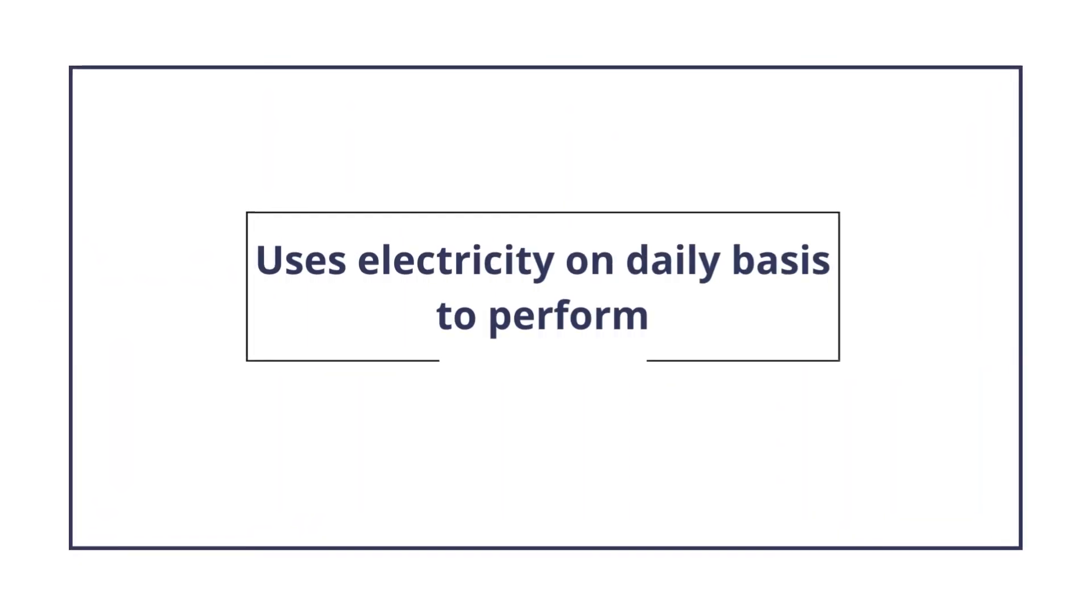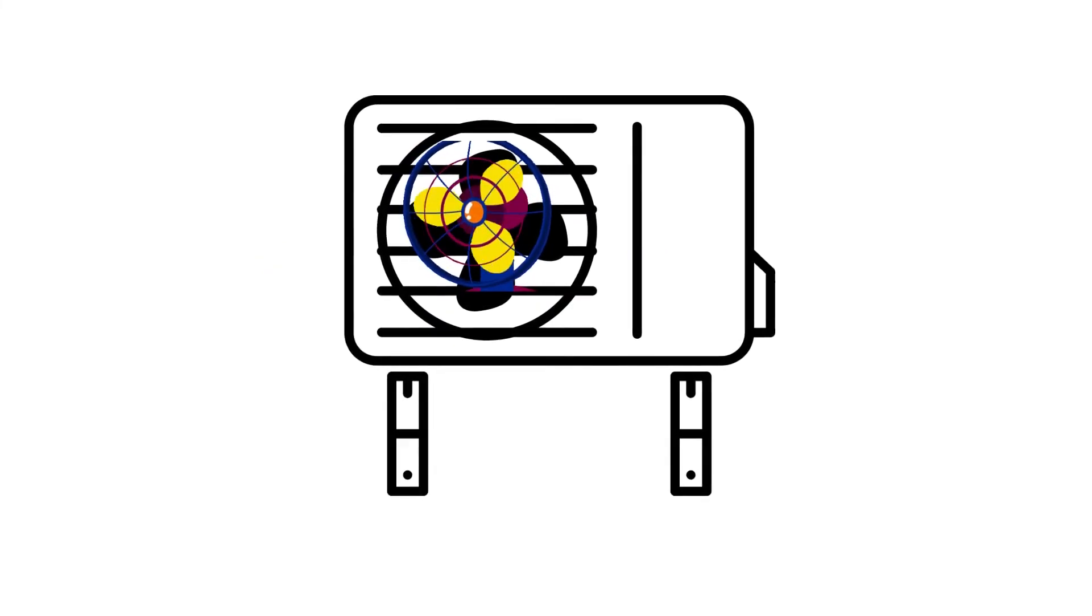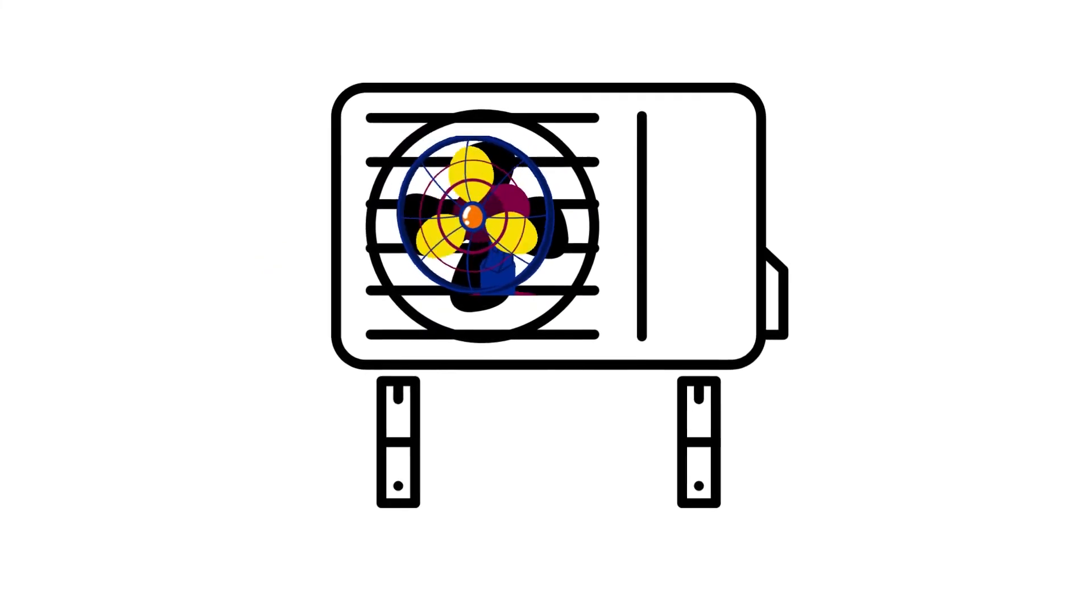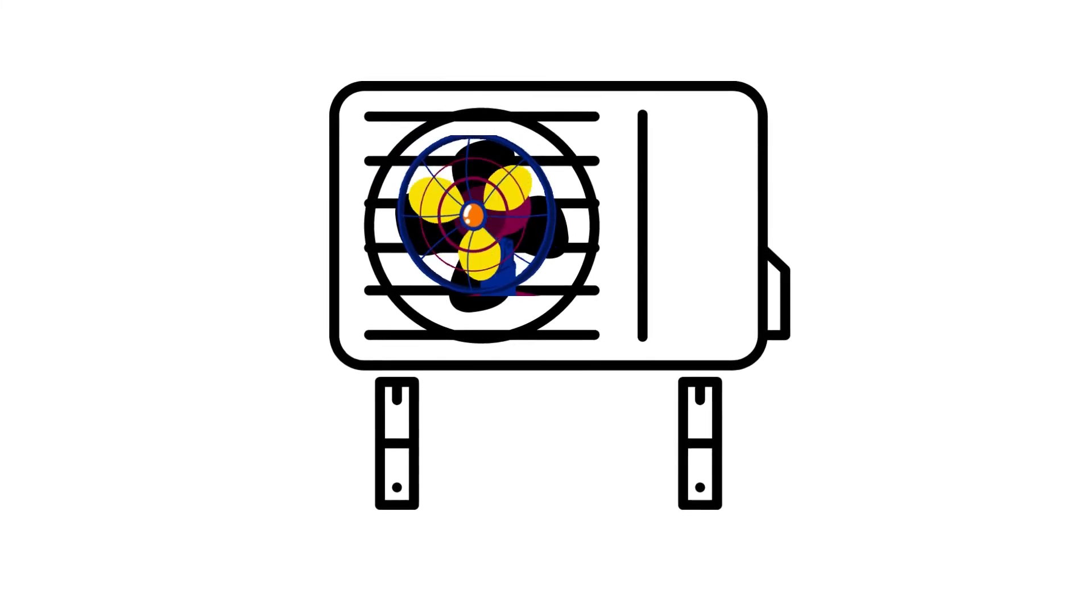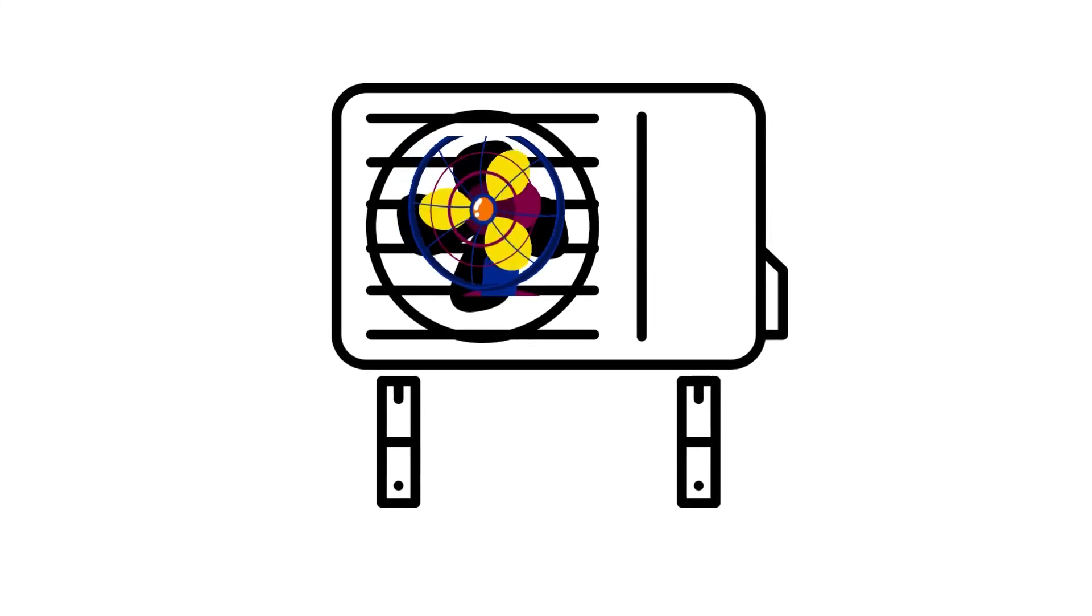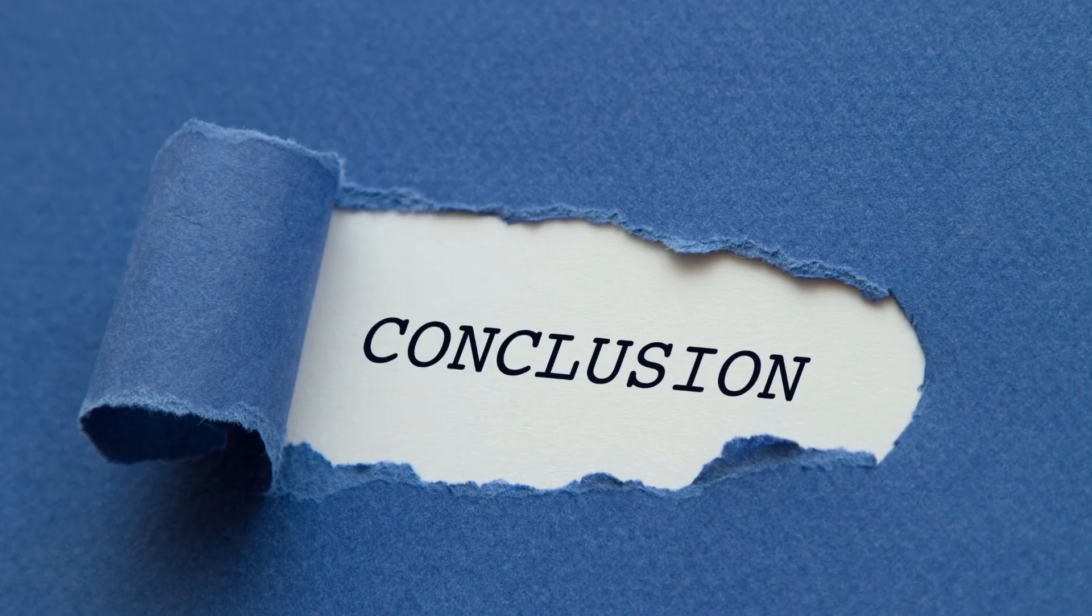The second is it uses electricity on a daily basis to perform. The compressor runs on the electricity to extract heat from the air. So every day it requires some amount of electricity to run. If there is no electricity, then the compressor will stop working and the water won't get heated.